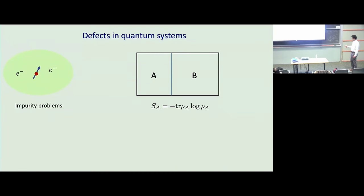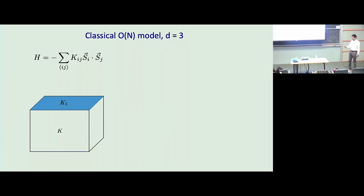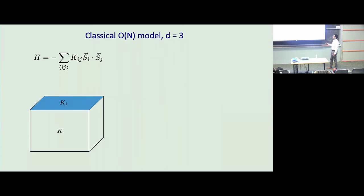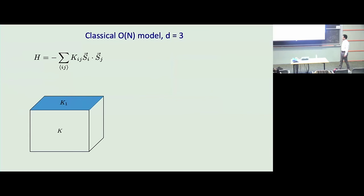So if the bulk is critical, this maps to some kind of defect theory. I introduced this in the quantum context, but most of my talk is going to be about classical critical systems — specifically about perhaps the simplest critical model in statistical mechanics: the classical O(N) model in three bulk spatial dimensions.